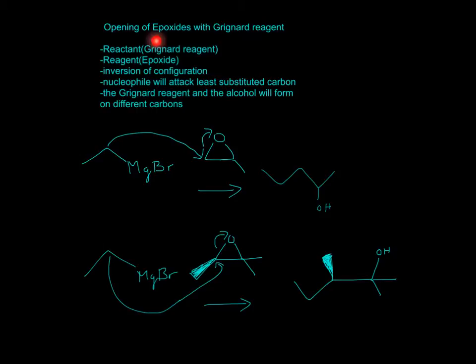This is the opening of epoxides with Grignard's reagent. Grignard's reagent adds a magnesium to an alkyl halide, such as bromine or iodine, and then makes it a nucleophile. When it becomes a nucleophile, it now follows an SN2 mechanism.